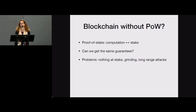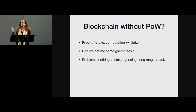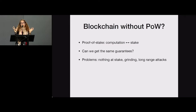Lastly, there are long-range attacks. An attacker could bribe old participants in a protocol and buy their old secret keys in order to rewrite the whole history of the blockchain. Because those participants have no more stake in the system and don't have their coins anymore, an adversary could do this attack for basically free. These are the three main problems discussed in proof-of-stake or generally proof-of-X settings, where creating a block being costless is a big problem.